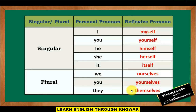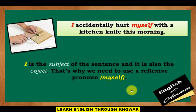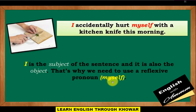Example sentence: 'I accidentally hurt myself with a kitchen knife this morning.' Here, 'I' is the subject of the sentence and it is also the object — that's why we need to use the reflexive pronoun 'myself.'